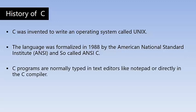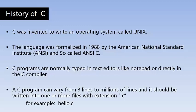C programs are normally typed in text editors like Notepad or directly in a C compiler. If you are on Windows, you can use Notepad for typing C programs, or write C programs directly in C compilers — there are plenty of C compilers available on the internet. In later classes we will learn how to run a C program in a compiler. A C program can vary from three lines to millions of lines and should be saved in one or more files with the extension .c, for example hello.c.